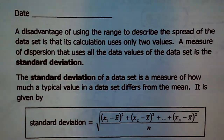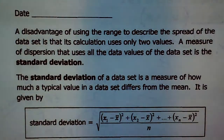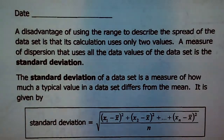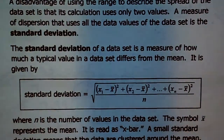And there is a measurement that includes all of the values in the data set — it's called standard deviation. The standard deviation of a data set is a measure of how much a typical value in a data set differs from the average. So if you figure out what your mean is, standard deviation tells you how far off from the mean each individual data value is. There is a formula, and we're going to break it apart so it won't seem so bad.